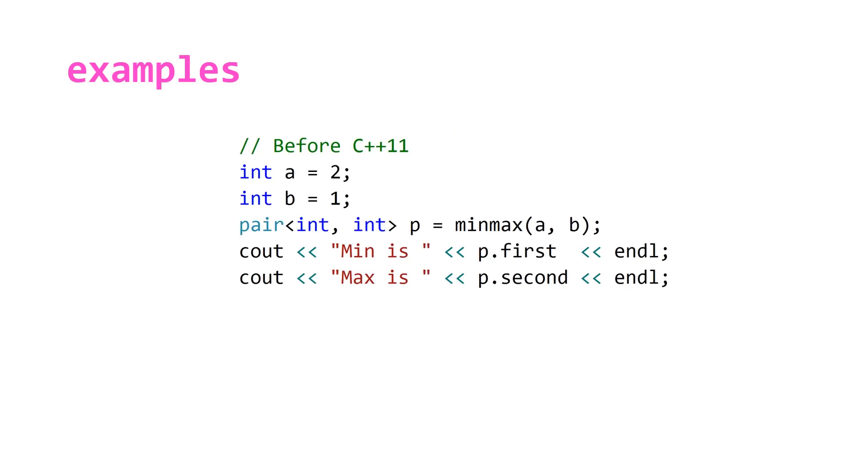Moving on to the minmax function. Here we have some pre-C++11 code. We have two integers a which is equal to 2 and b which is equal to 1. If we pass this to our minmax algorithm and store it in a pair of ints, we can access the min and the max by going p.first for the minimum and p.second for the maximum.